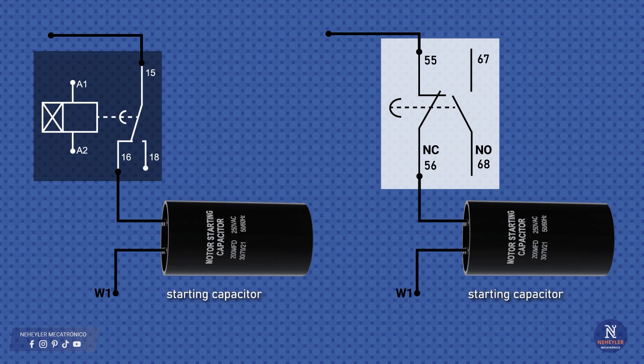On screen we see two ways to represent the start capacitor connection. In both cases the capacitor is connected through a normally closed contact. The function is the same, when starting the motor the contact is closed and the capacitor enters service, after a few seconds the contact opens and the start capacitor is disconnected automatically.